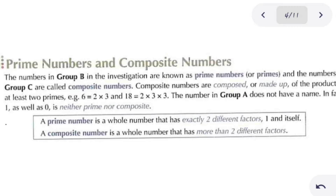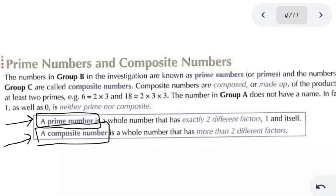Now we are going to classify numbers in another way. According to this classification, we divide numbers into two groups: the first group is called prime numbers and the other is called composite numbers. This classification is based on the number of factors a number has. If a number has exactly two different factors, it is called a prime number. If it has more than two factors, it is called a composite number.